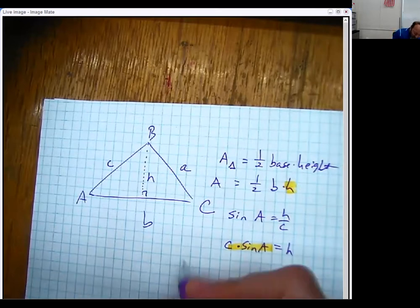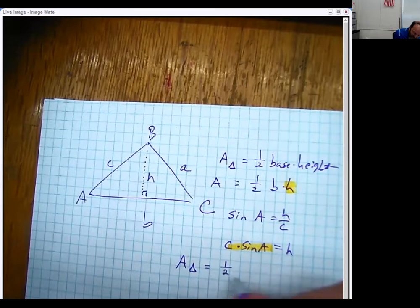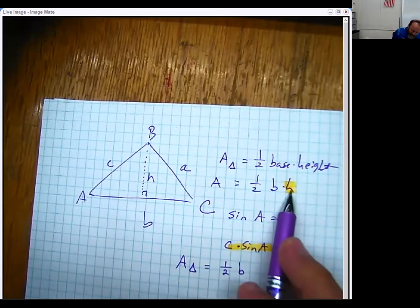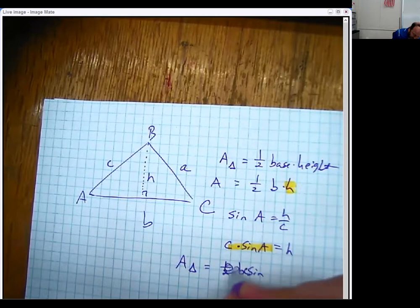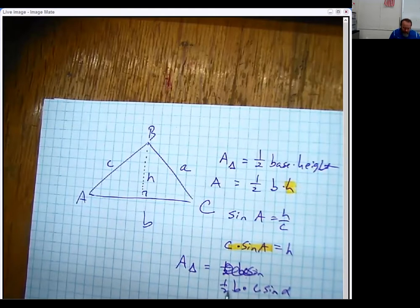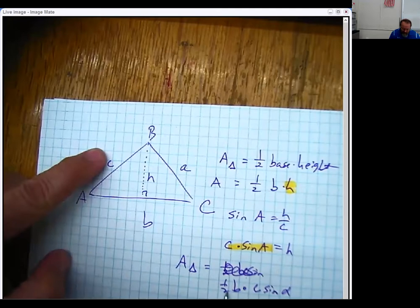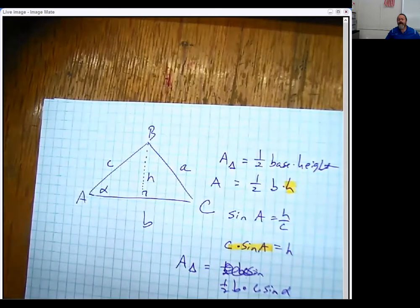So if we were to take this piece right here and substitute this in for H right here, we have a nice simple little formula that the area of the triangle is one half the base, but instead of putting the height there, I'm going to put C sine... One half the base times C sine angle A, which I'm going to go ahead and change that up and call it alpha. So the area is one half B, C sine alpha. So it's one half the product of B times C times the sine of that angle right here in the middle of that, which is pretty cool.